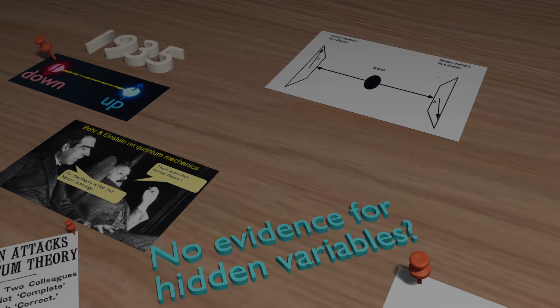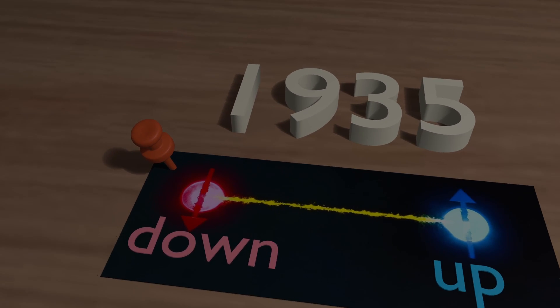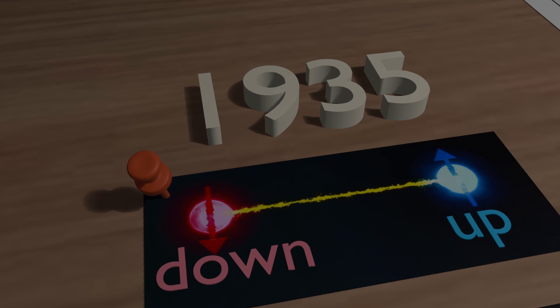The story begins in 1935. In quantum mechanics, when two particles become entangled, their properties are linked, no matter how far apart they are.